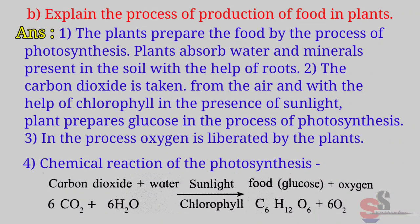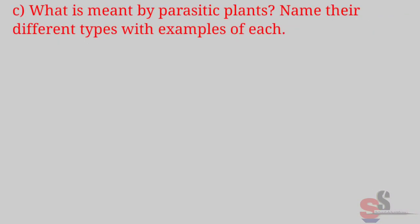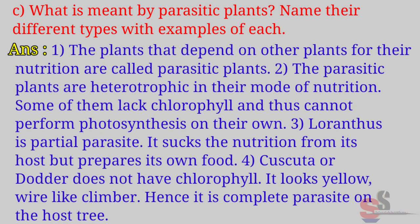6CO₂ + 6H₂O, in the presence of sunlight and chlorophyll, forms C₆H₁₂O₆ + 6O₂. C. What is meant by parasitic plant? Name their different types with examples. Answer: The plants that depend on other plants for their nutrition are called parasitic plants. Parasitic plants are heterotrophic in their mode of nutrition. Some of them lack chlorophyll and thus cannot perform photosynthesis on their own.